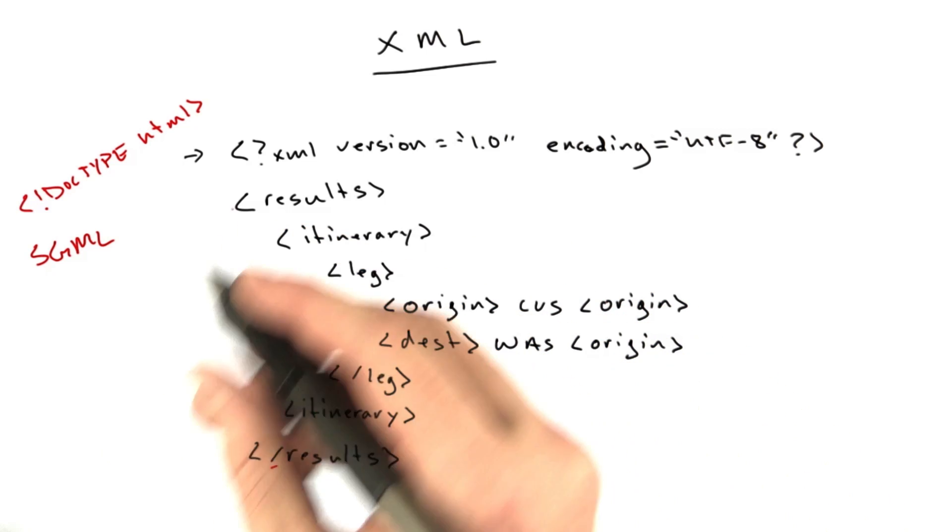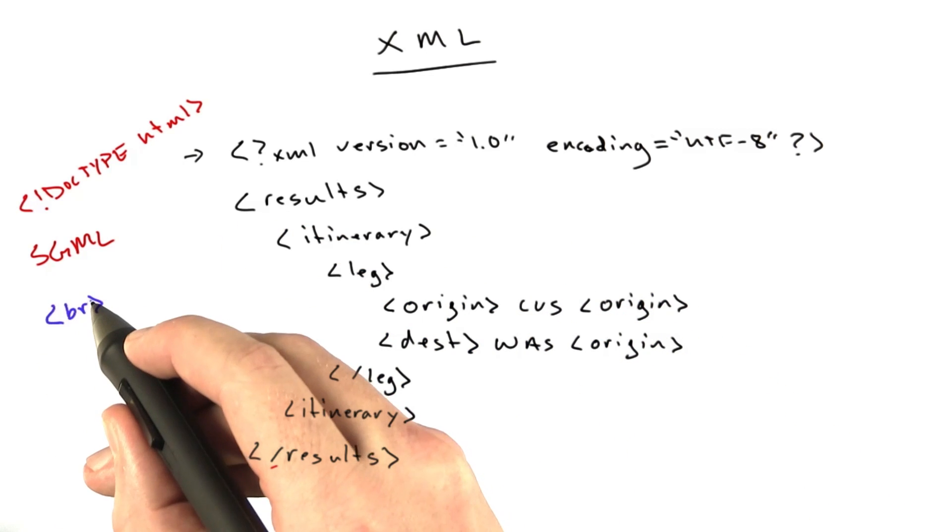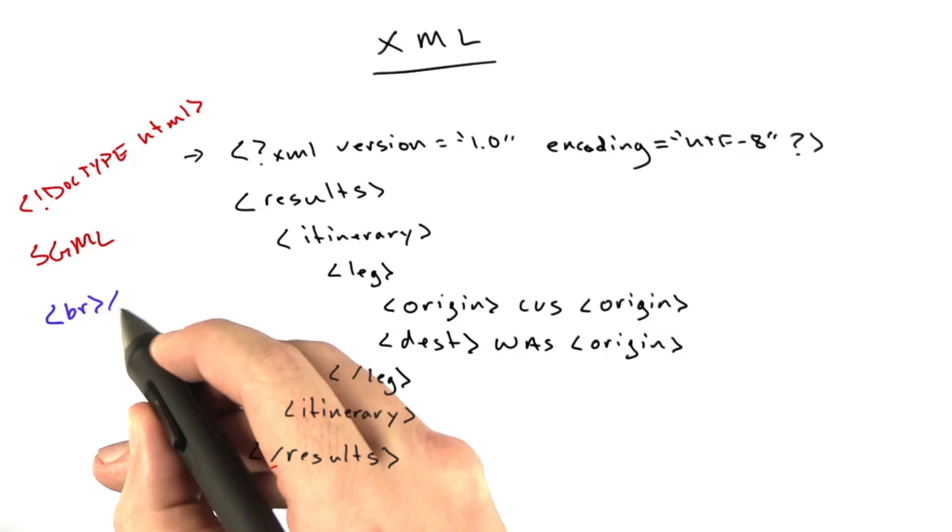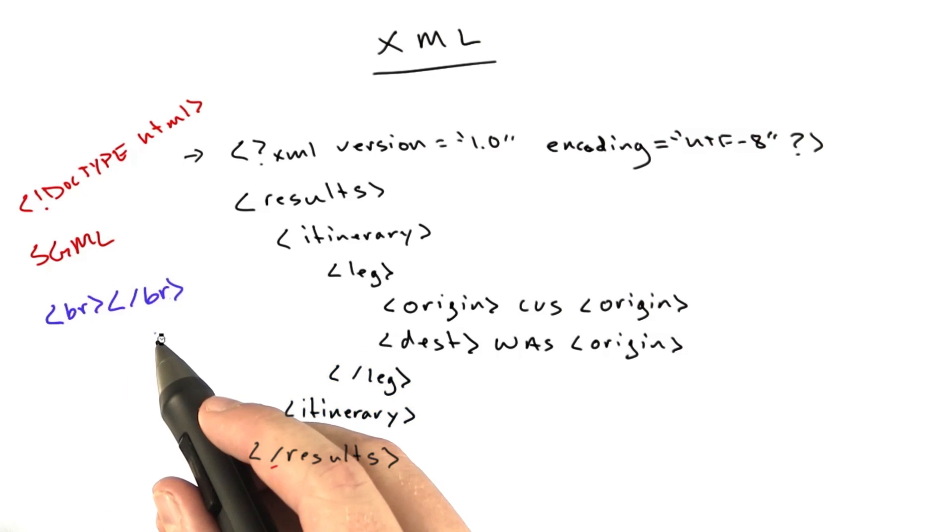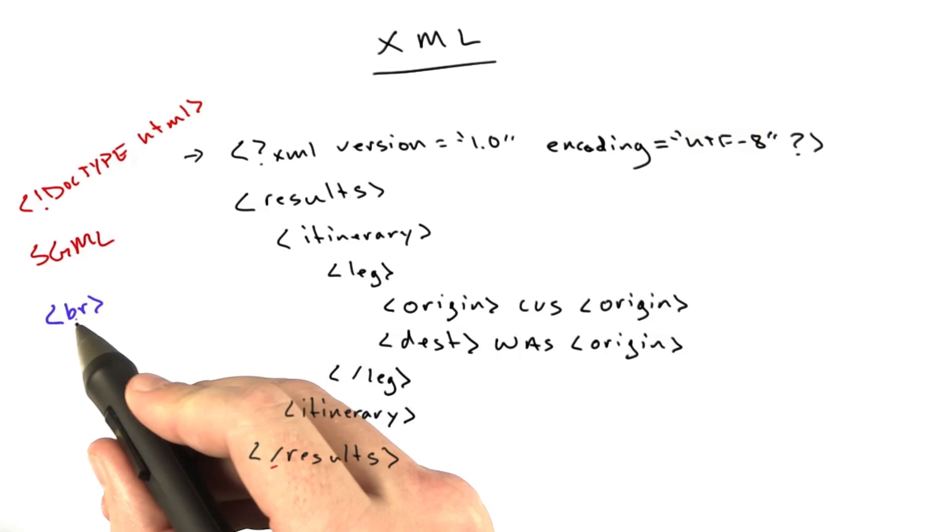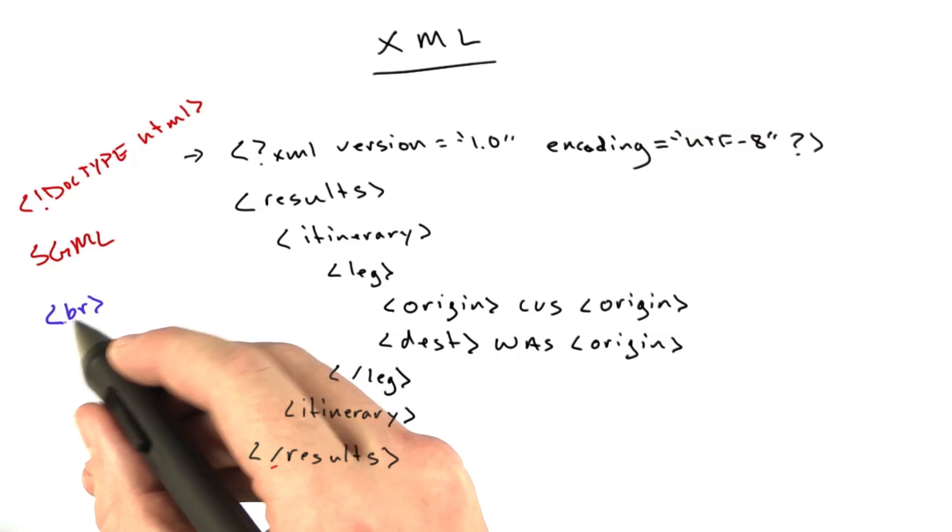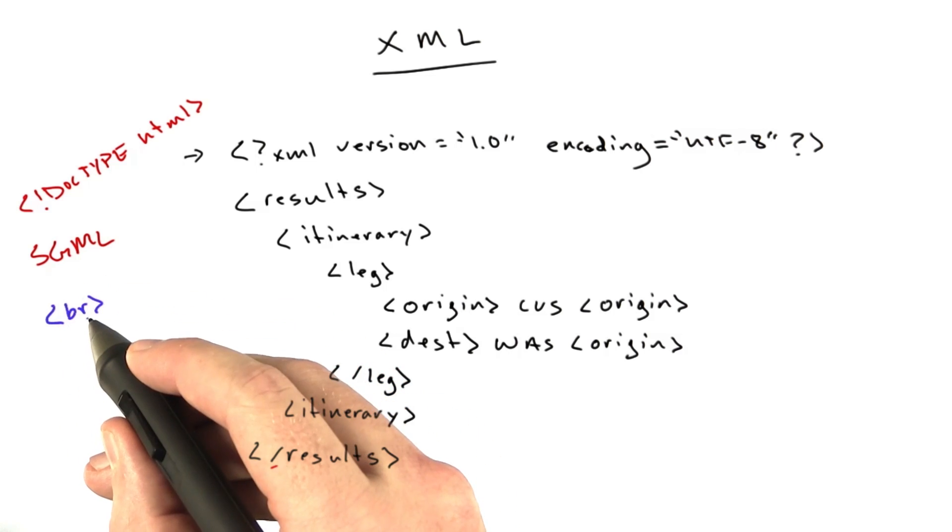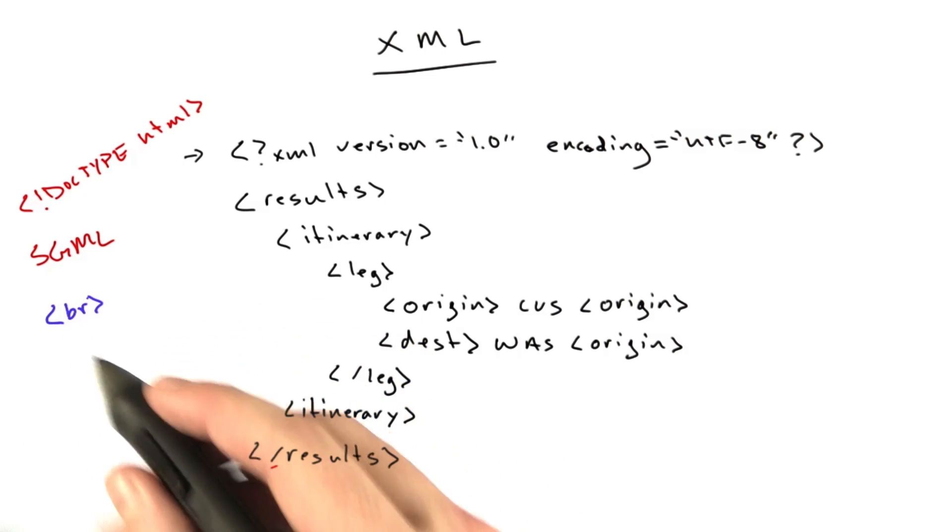Remember in HTML, we could have the br tag for putting in a line break, and we never had a closing br tag. That's because HTML doesn't require all tags to close. We have this notion of a void tag. The line break was an example of one of those. And it's just an opening tag.